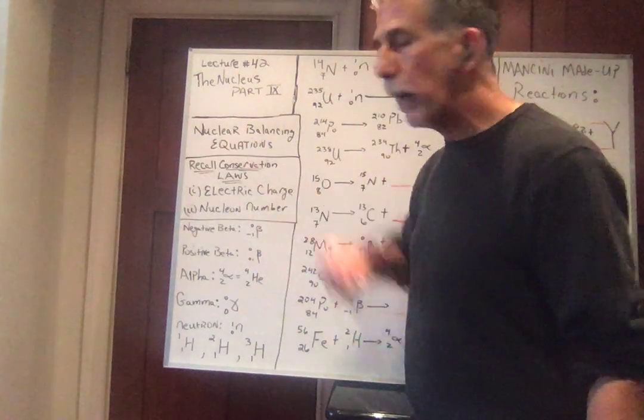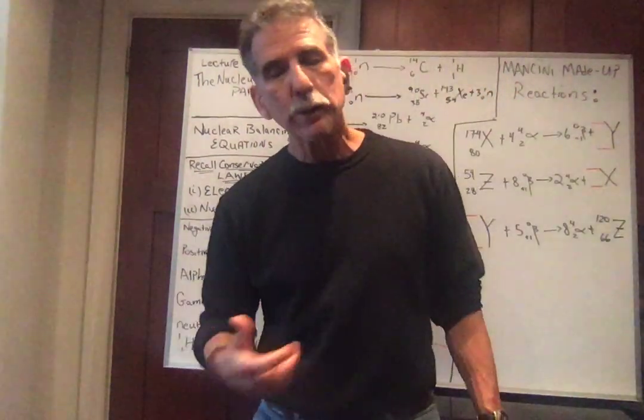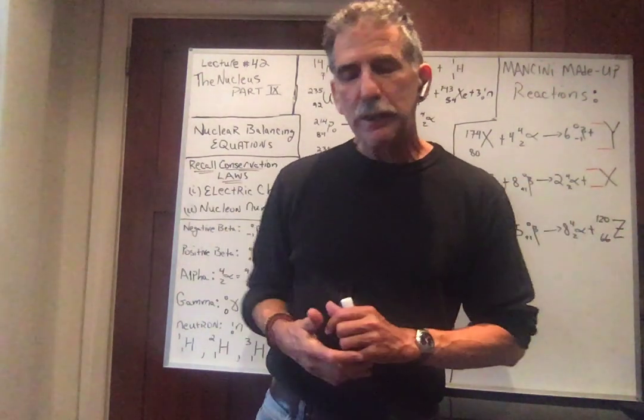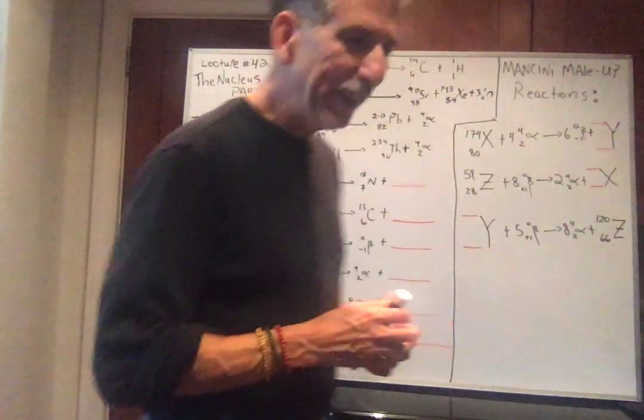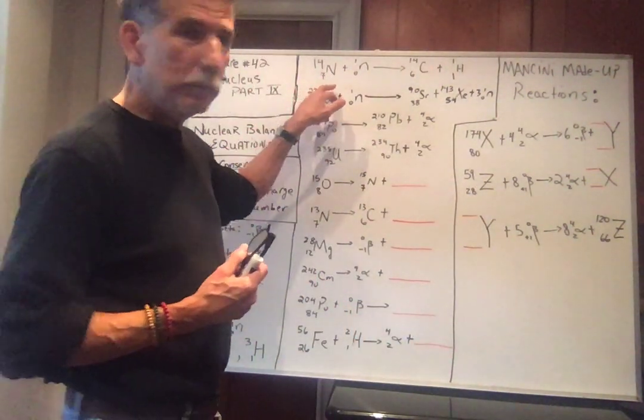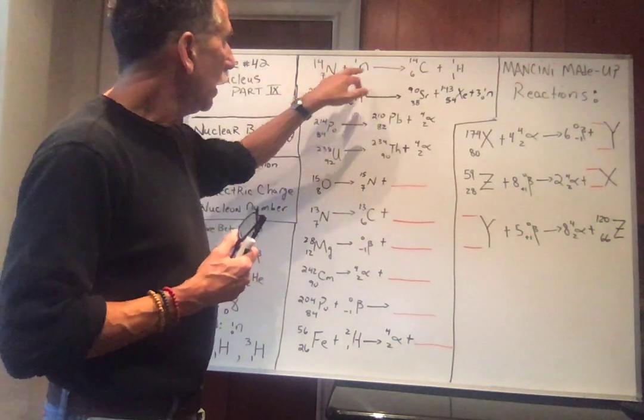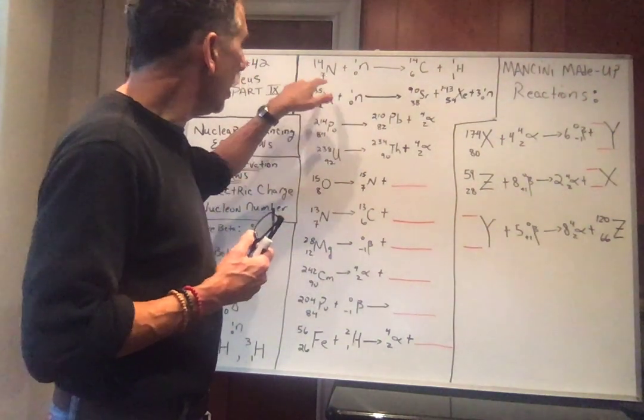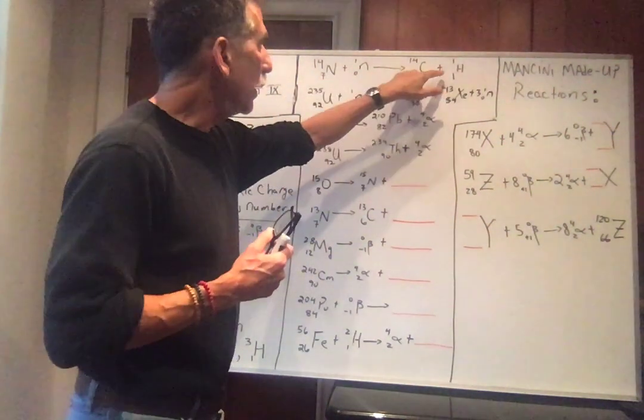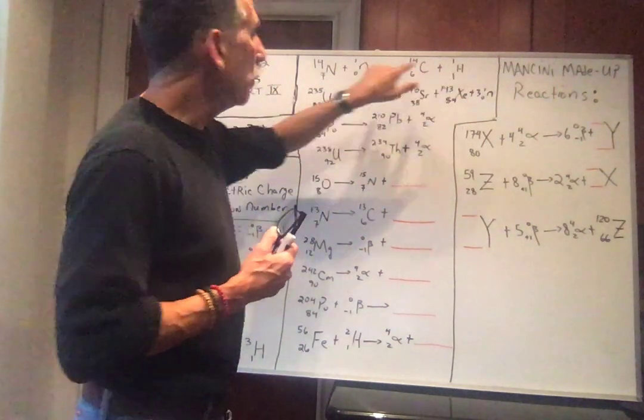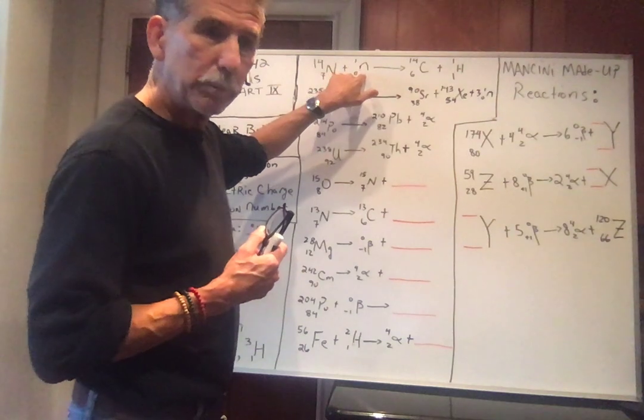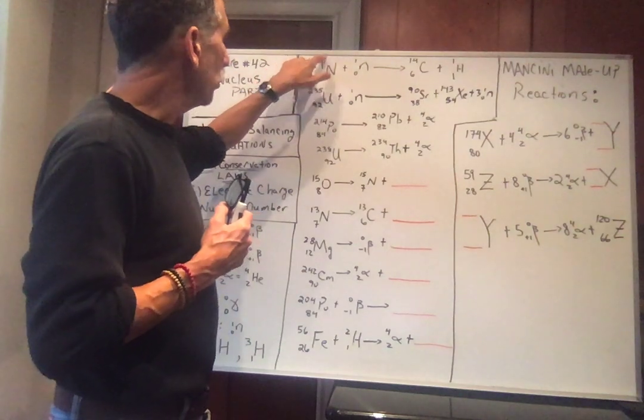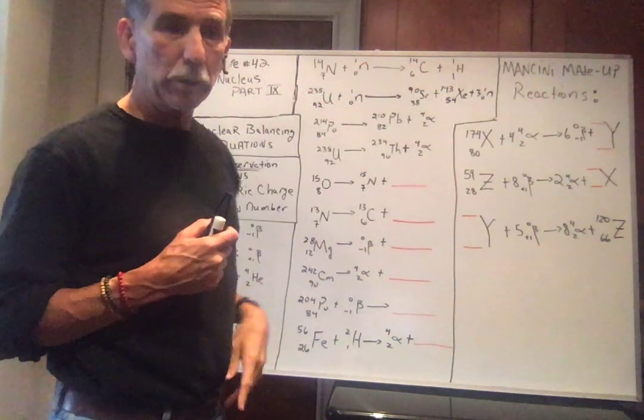Let's talk about these nuclear balancing equations. Very simple. All you have to do is add things up. I'll do a couple of examples, then we'll do some problems together, and then I made some problems up, some Mancini makeup problems. Suppose I have a nitrogen nucleus, and you smash it with a neutron. On the bottom is the electric charge. The numbers on the bottom on the right-hand side must equal the numbers on the bottom, the electric charge on the left-hand side. The same for the nucleon number on top. The number on top on the left must equal the number on top on the right.